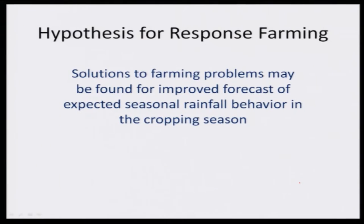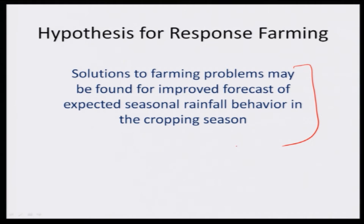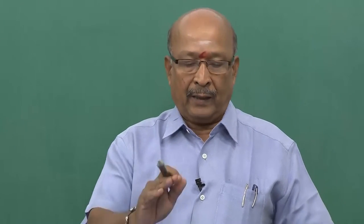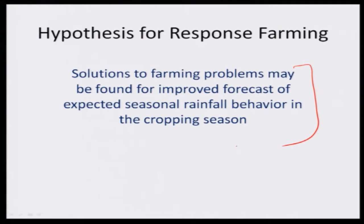There must be a hypothesis. This was tested experimentally in Australia. They put a hypothesis that solutions to farming problems may be found through improved forecast of expected seasonal rainfall behavior in the cropping season. You can provide a solution for the risk from the forthcoming rainfall season. This hypothesis was tested and agreed — solutions are already available. You can pick up the solutions based on your knowledge and scientific knowledge to meet the challenge from the forthcoming rainfall season.